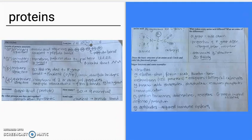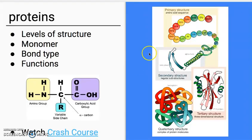Let's talk about the general structure. I'm going to look at both the polymer structure — the collection of individual building blocks — and then the individual building blocks themselves. The interesting thing about proteins is that we're going to talk about their three-dimensional structure, which can be broken down into four different levels: the primary structure, the secondary structure, the tertiary structure, and the quaternary structure.